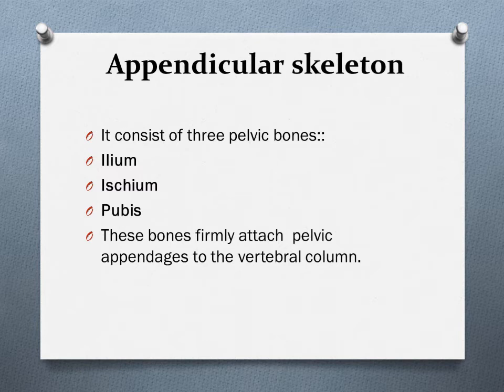The pelvic girdle of amphibians consists of three pelvic bones: the ilium, ischium, and pubis. These bones firmly attach pelvic appendages to the vertebral column and are important for support on land. Tetrapods depend on appendages for locomotion, not on the body wall. Therefore, the body wall musculature is reduced in tetrapods and appendicular musculature has become strong.